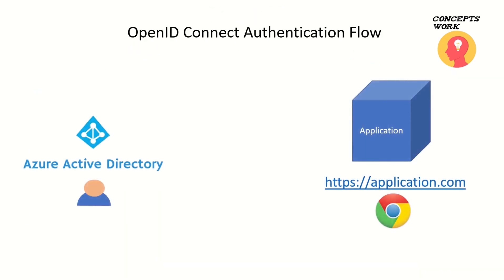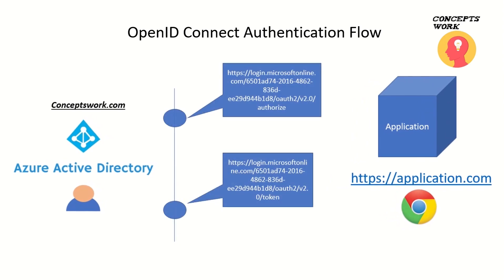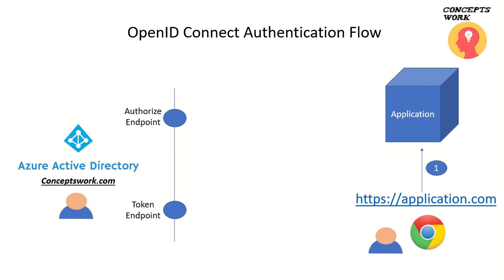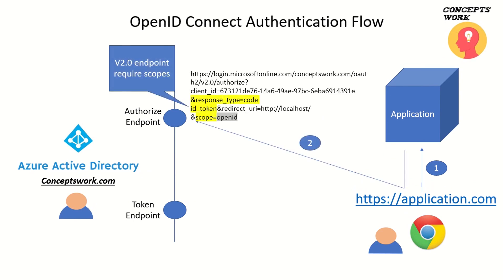Now let's look at how the OpenID Connect authentication flow works. The first requirement is that your application should be registered in Azure Active Directory. Let's assume the home page is Application.com. There are two endpoints used in this flow: the Authorize Endpoint and the Token Endpoint. The user opens a browser and goes to Application.com, which redirects the user to the v2.0 Authorize Endpoint. In my directory I have mentioned ConceptsWork.com, and in the response type I have mentioned Code and ID Token.